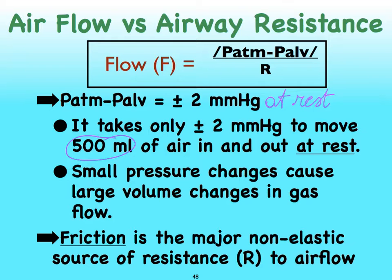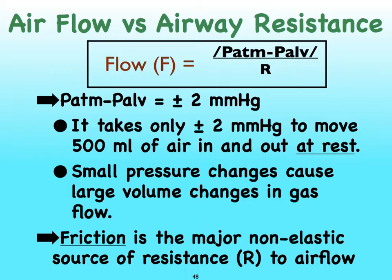When we talk about the flow of air, what we really need to focus on is resistance. What impacts resistance the most is friction. Friction is the major non-elastic source of resistance. Our lungs express quite a bit of elasticity due to the presence of elastic fibers, and these elastic fibers always want to recoil and therefore increase resistance. But we're now going to take a look at friction, which is the major non-elastic source of resistance to airflow.